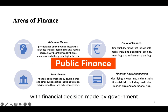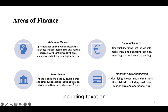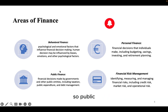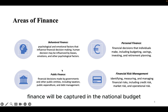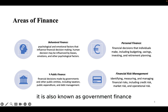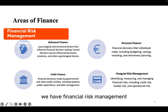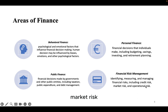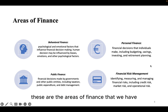Public finance deals with financial decisions made by governments and other public entities, including taxation, public expenditure, and debt management. It is captured in the national budget, which shows the income and expenditure of government, and is also known as government finance. Finally, financial risk management has to do with identifying, measuring, and managing financial risks, including credit risk, market risk, and operational risks.